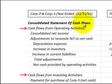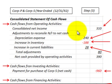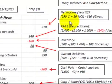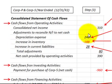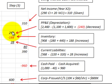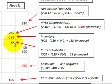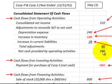For step three, the consolidated statement of cash flows for the parent and subsidiary corporation for the year ended 12/31/X2 using the indirect method: cash flows from operating activities start with consolidated net income of $310,000, which includes both controlling and non-controlling interest. Adjustments to reconcile net income to net cash include depreciation expense of $240,000 added back, an increase in inventory of $188,000 subtracted, and an increase in current liabilities of $28,000 added. Total adjustments are $80,000, so net cash provided by operating activities is $390,000.